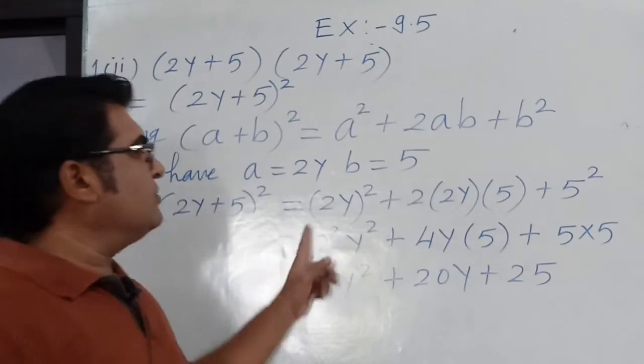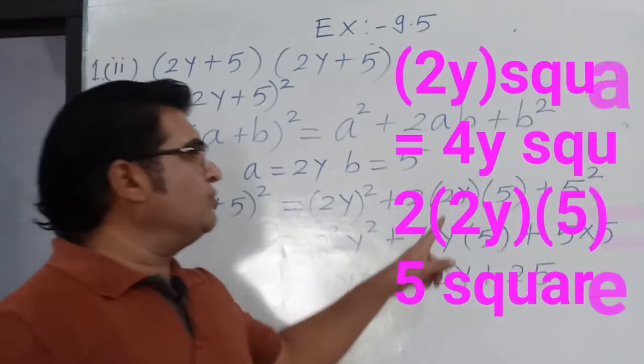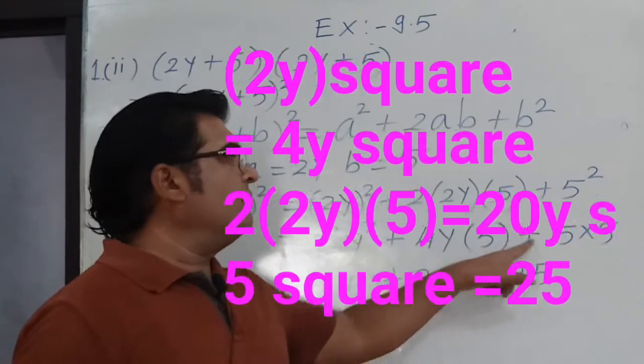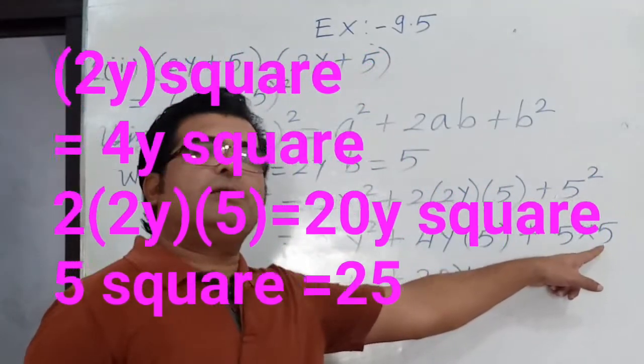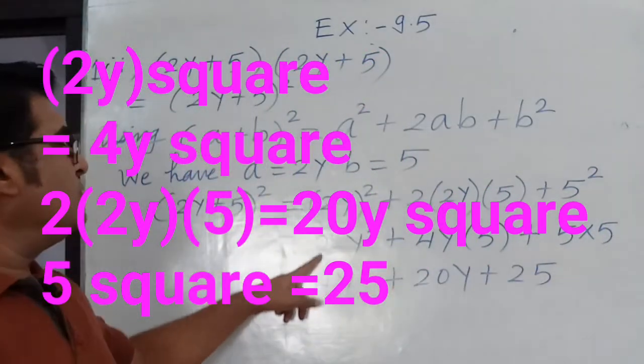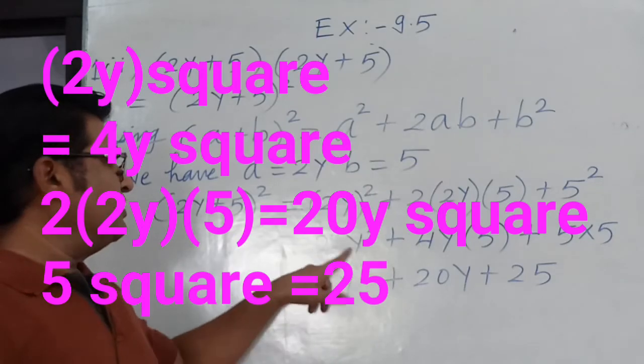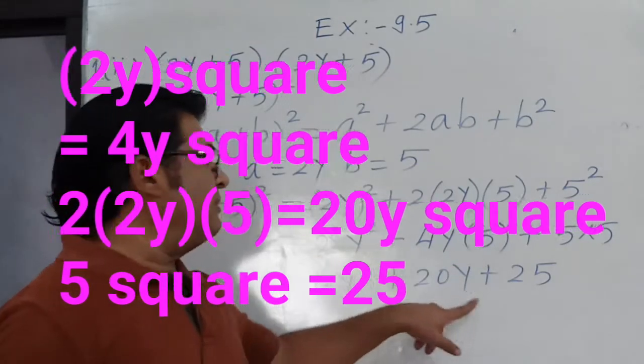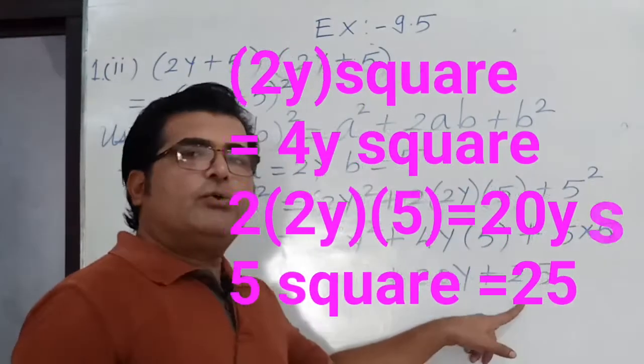When we simplify, it will be 2 square y square plus 2 into 2y into 5 plus 5 square, which means 5 into 5. 2 square becomes 4, so it is 4y square plus 4 times 5 is 20y, plus 5 times 5 is 25.